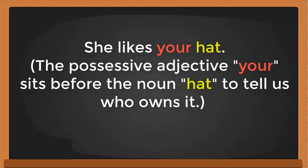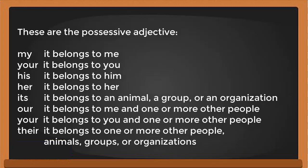Here is the possessive adjective chart: My — belongs to me. Your — belongs to you. His — belongs to him. Her — belongs to her. Its — belongs to an animal, group, or organization. Our — belongs to me and one or more other people. Your — belongs to you and one or more other people.